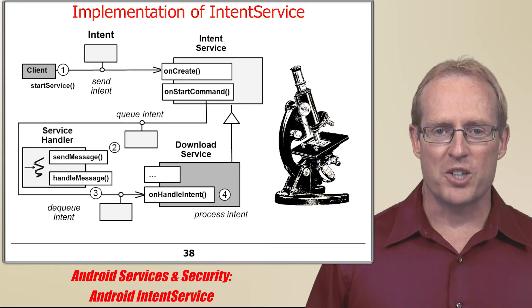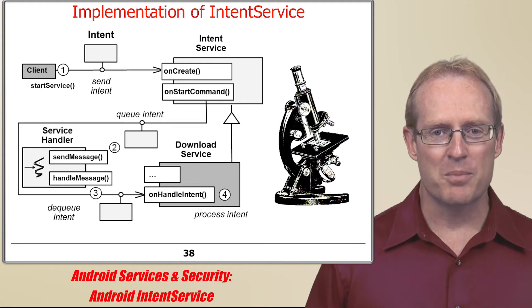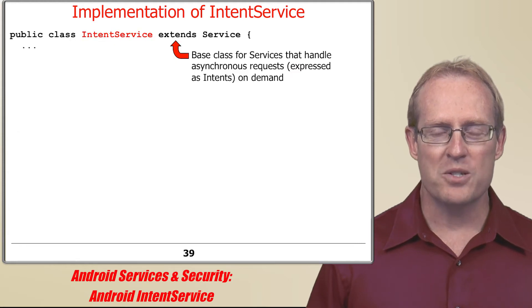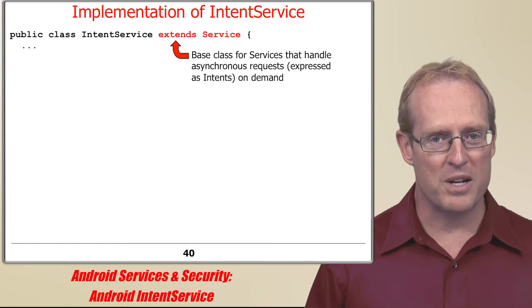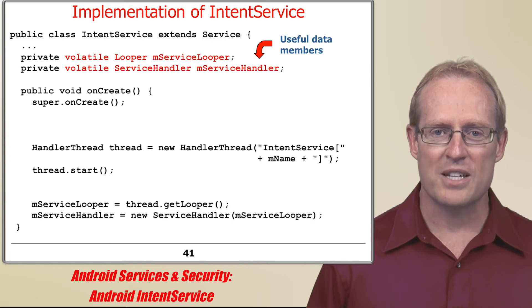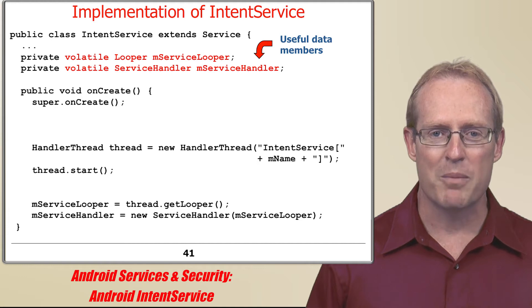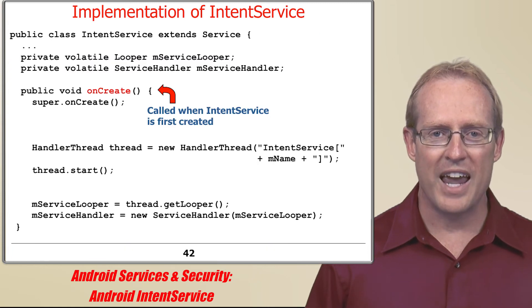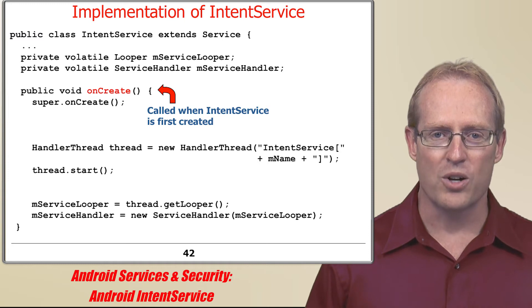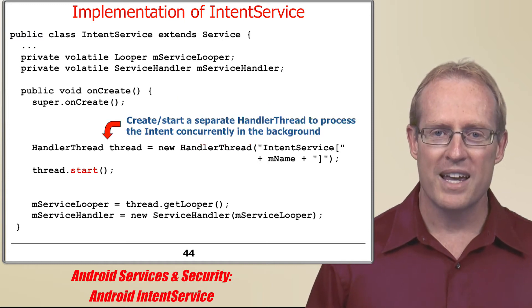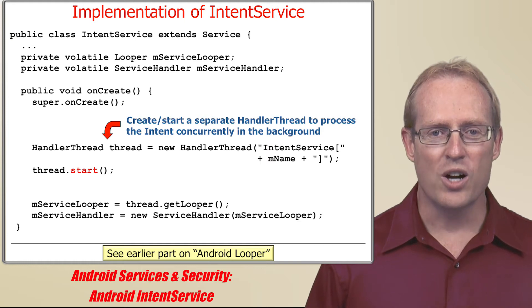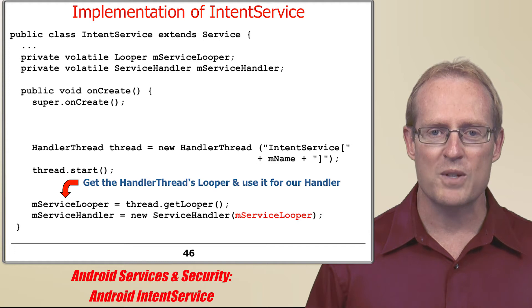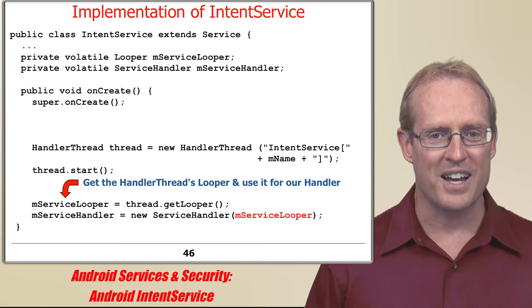Now that we've summarized the structure and functionality of the intent service framework, we'll analyze its implementation based on the code at this path name. The IntentService class extends the service superclass and overrides several hook methods to process asynchronous requests expressed as intent commands on-demand. It also defines looper and service handler objects as volatile data members to ensure that they're visible to the background handler thread. When a client calls startService, the Android service framework launches the intent service and invokes its onCreate hook method, which creates and starts a handler thread using the HandlerThread class, then passes the handler thread's looper to the constructor of ServiceHandler so its handleMessage hook method will be dispatched in the context of that thread.